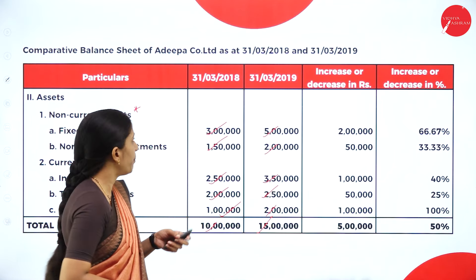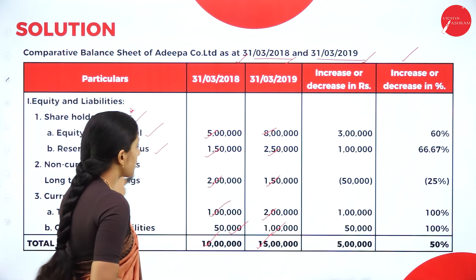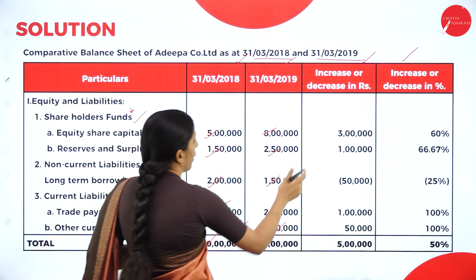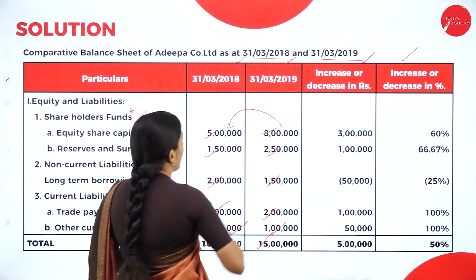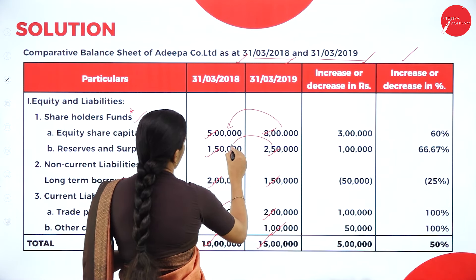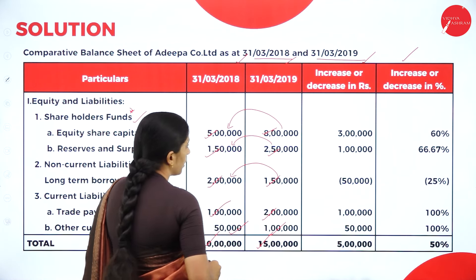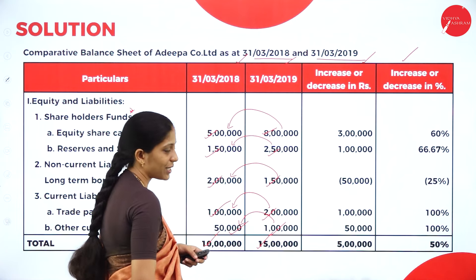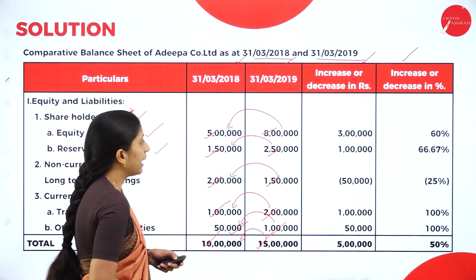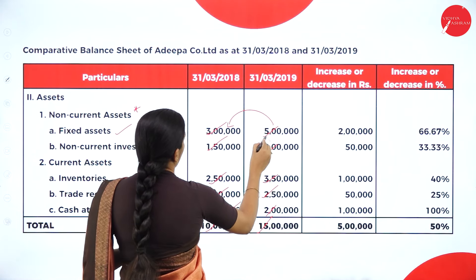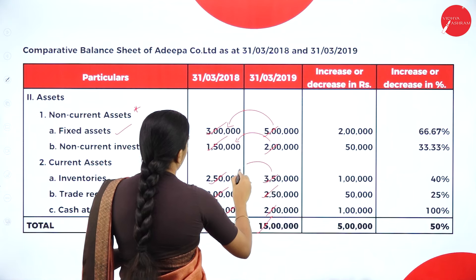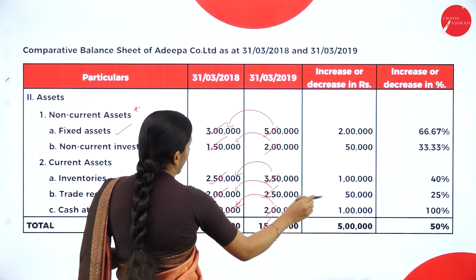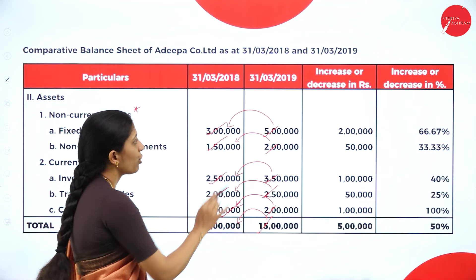Now coming to the third column — increase or decrease in rupees. This is where the calculation actually starts. For share capital: 8 lakh minus 5 lakh = 3 lakh. Reserves and surplus: 2 lakh 50,000 minus 1 lakh 50,000 = 1 lakh. Long-term borrowings: 1 lakh 50,000 minus 2 lakh = minus 50,000. Trade payable: 2 lakh minus 1 lakh = 1 lakh. Other current liabilities: 1 lakh minus 50,000 = 50,000. Total: 15 lakh minus 10 lakh = 5 lakh. For assets — fixed assets: 5 lakh minus 3 lakh = 2 lakh. Non-current investments: 50,000. Current assets calculated similarly. Total: 15 lakh minus 10 lakh = 5 lakh.